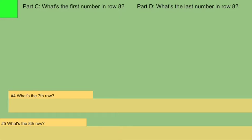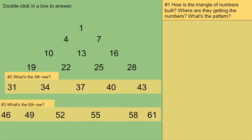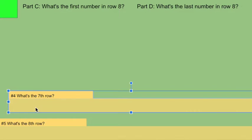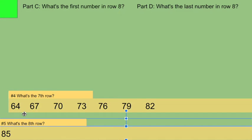What's the first number in row 8? Let me just continue the pattern. Row 7, row 8. All right, we ended on 61. I'm going to pick up 64. 85 is the first number in row 8.